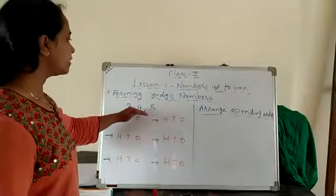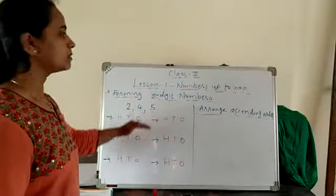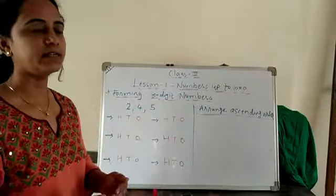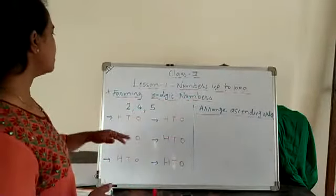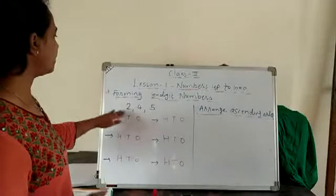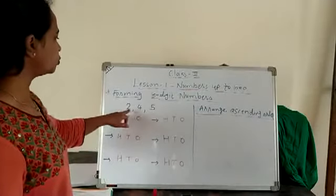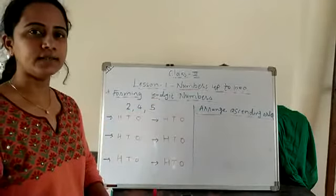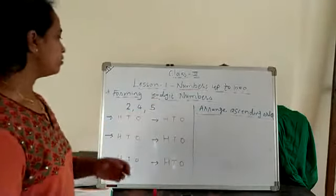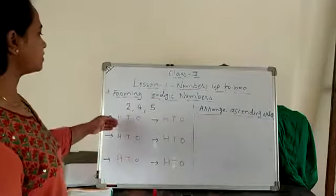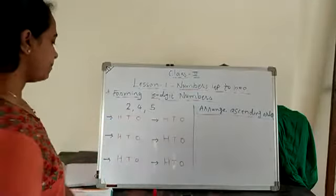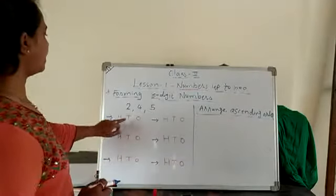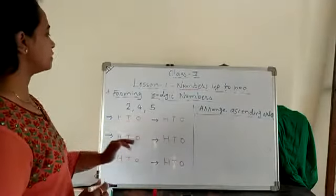Aapko 3 digits di gayi hain, usse aapko different numbers banane hain. So here, given digits are 2, 4, and 5. So first step: look at here — 100, 10, and 1.